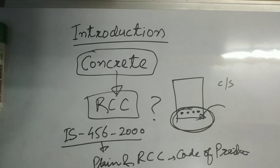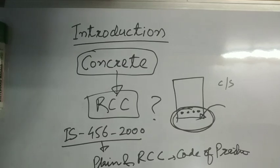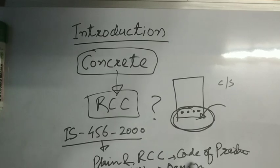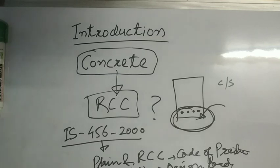Other codes are IS 875 part 1 to 5. These are regarding design loads: dead load, live load, load combination, snow load, and wind load.